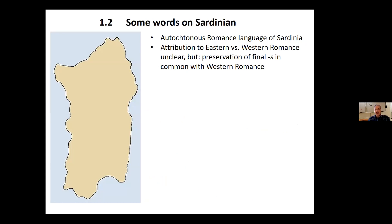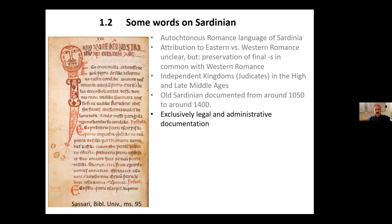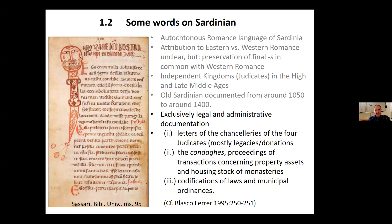Now some words on Sardinian. Sardinian is the autochthonous romance language of Sardinia. It cannot really be attributed to Eastern or Western Romance, but as we have already seen, there is the preservation of final S, which it has in common with Western Romance languages. In the middle ages, there were independent kingdoms, the so-called judicates. There is exclusively legal and administrative documentation of Old Sardinian of different types, which you can see here, but which I won't go into.